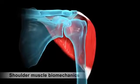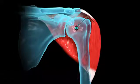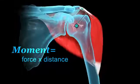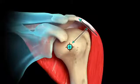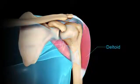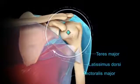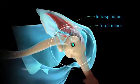Muscles generate forces that are converted to torques in proportion to the perpendicular distance between the joint center of rotation and the muscle's line of action. This distance is the muscle's moment arm. The larger the moment arm, the greater capacity for that muscle to generate torque for motion and support external loads. The location of the moment arm relative to the center of rotation determines the type of motion the muscle creates. Lines of action superior lateral generate abduction; inferior medial generate adduction; anterior generate internal rotation; and posterior generate external rotation.